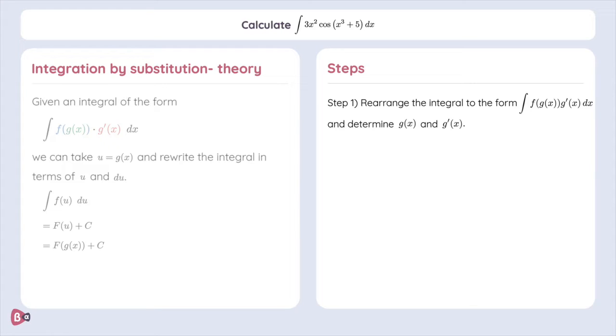In our case, we first reorder it. We are going to put 3x square times dx at the end, because as we'll see later, this is exactly the du. Then, of course, we recognize that x cubed plus 5 is our best candidate for g of x, in part because 3x square is its derivative, and therefore, the ideal candidate for g prime of x.